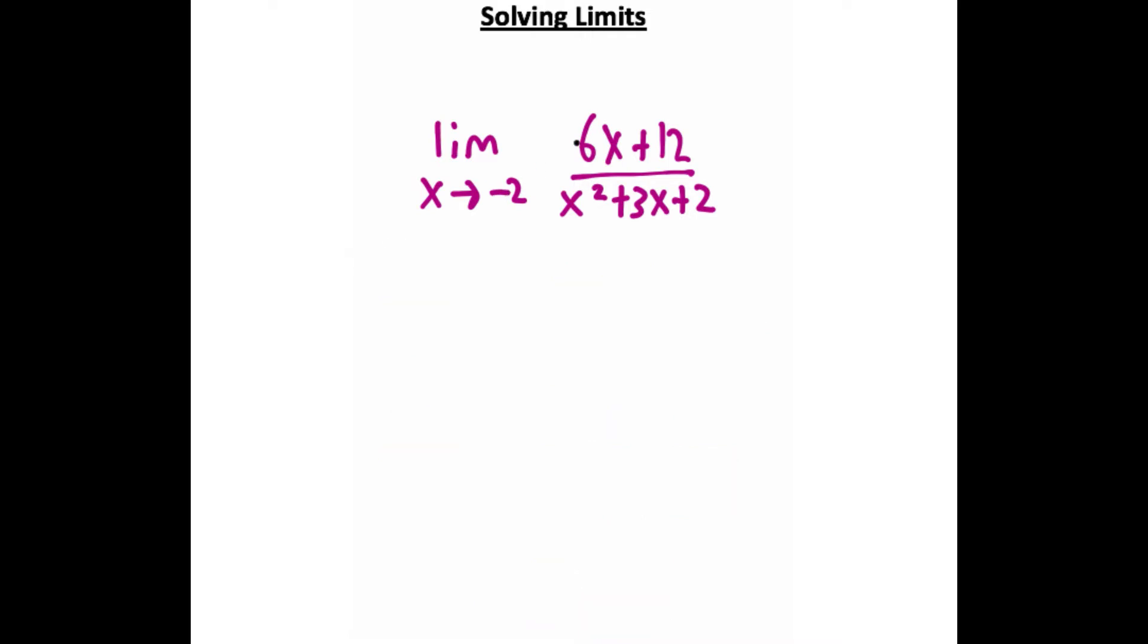So how can I do this? Well, I can do this using factoring. So if I factor a six out of this x term, and I factor a six out of this 12, what I'm going to end up with is this term right here, six times x plus two, because I factor that six out. Now I need to factor this bottom expression.